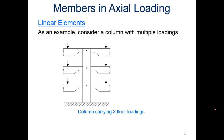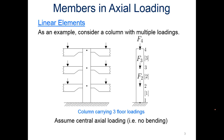If we look at linear elements, we can see that we have linear elements in axial loading. An example here is if we have a couple of different floors and some vertical members supporting these different floors. We can assume central axial loading — there's no bending here. So we have different forces that the different floors are applying on this column: force at node four, at node three, node two, and nothing at node one besides the weight of the column. We have different elements between those nodes: one, two, and three.